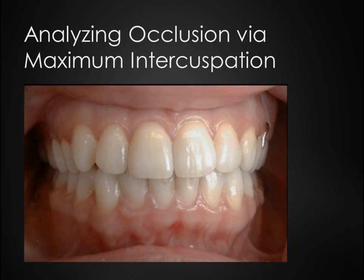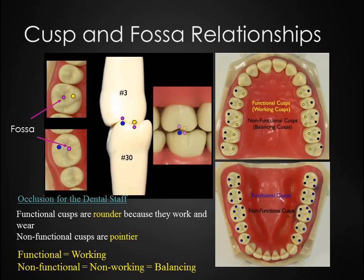When analyzing occlusion via maximum intercuspation, the buccal cusp of the posterior maxillary teeth overlaps the buccal cusp of the posterior mandibular teeth. Anterior maxillary teeth are positioned facially to anterior mandibular teeth and overlap the mandibular teeth normally about one-quarter to one-third of the occlusal gingival height. The terms functional and working are both used to describe the cusps that occlude with the opposing arch in maximum intercuspation. Working cusps are the palatal cusps on maxillary and buccal cusps on mandibular posterior teeth. Working cusps are rounder because they wear down as they function, while non-working cusps tend to be pointier. The word balancing is used to refer to non-functional and non-working.